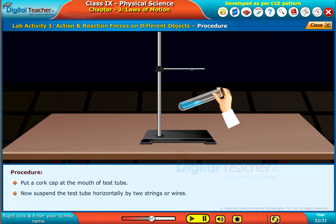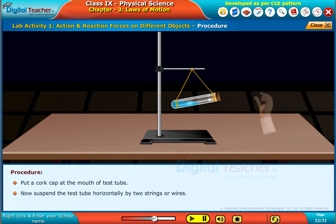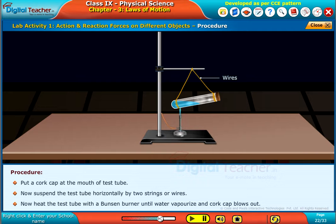Now, suspend the test tube horizontally by two strings or wires. Now heat the test tube with a Bunsen burner until water vaporizes and the cork cap blows out.